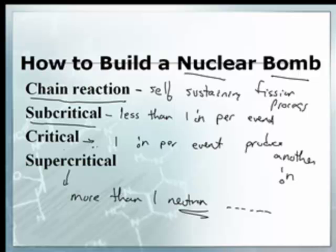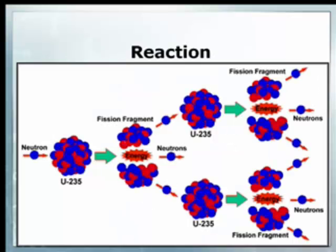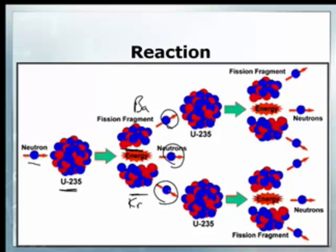A bomb, on the other hand, is shooting for supercritical. If I have a neutron that bombards a uranium-235 nucleus, it will split apart into two other elements — barium and krypton. Then it kicks out three more neutrons in the reaction. At that stage, we're talking a supercritical reaction.